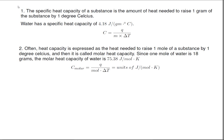Since one mole of water is 18 grams, the molar heat capacity of water is 75.38 joules per mole Kelvin. We have an almost identical equation that says the heat capacity molar is Q divided by moles times delta T, and now the units are joules per mole K.